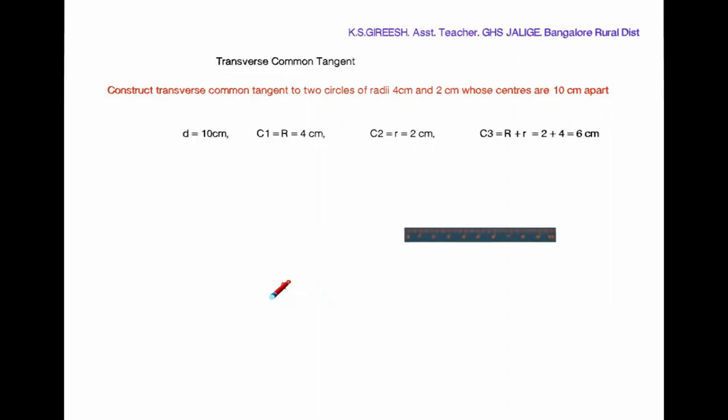Construct a transverse common tangent to two circles of radii 4 cm and 2 cm whose centers are 10 cm apart. Here D equals 10 cm, R equals C1 equals 4 cm, C2 equals 2 cm, that is C3 equals 2 plus 4, 6 cm. Draw a line segment AB equals 10 cm.